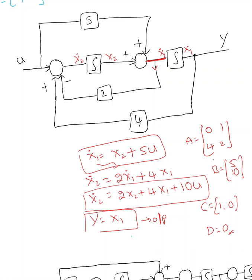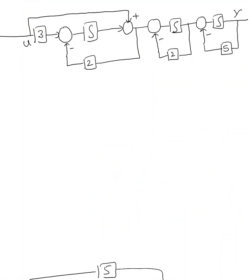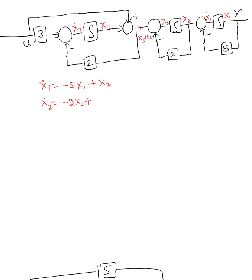Writing a state equation and output equation from a simulation diagram is easy. Here is another example with three integrators, so we'll have three state variables: x1, x2, x3, with x1 dot, x2 dot, and x3 dot. From the diagram, x1 dot equals minus 5x1 plus x2. For x2 dot, the signals coming in give us minus 2x2 plus x3 plus u.